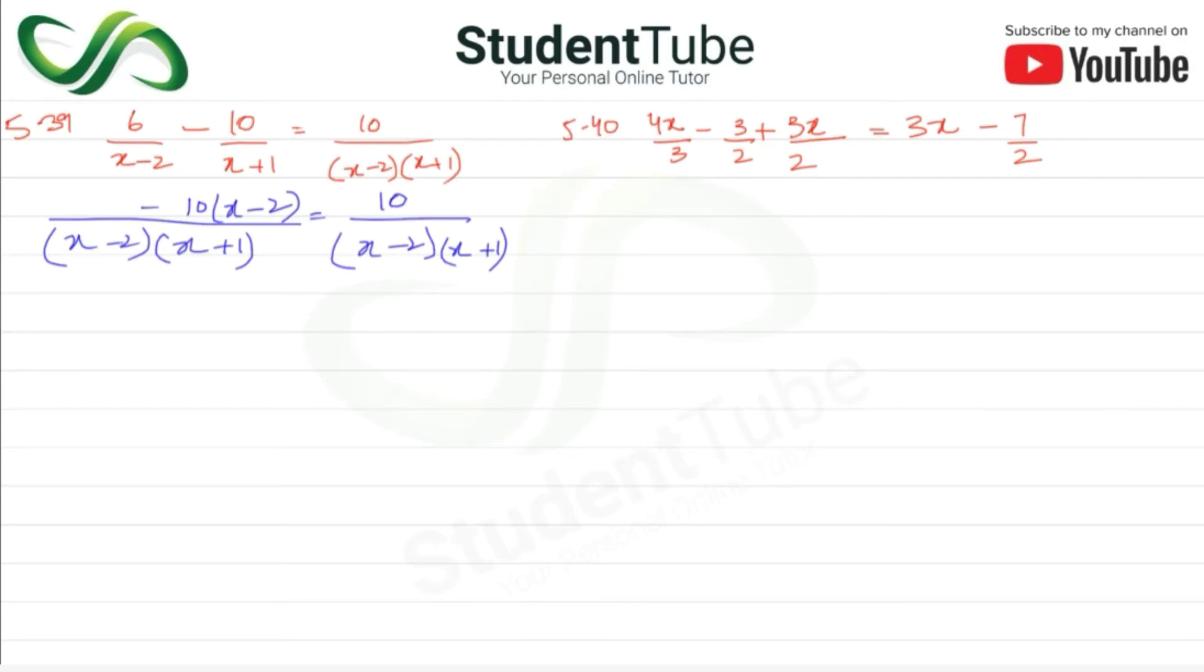So 6, x plus 1 multiply, so 6x plus 6 minus 10x, minus minus plus 10 to the 20, upon x minus 2 and x plus 1, is equal to 10 upon x minus 2, x plus 1.